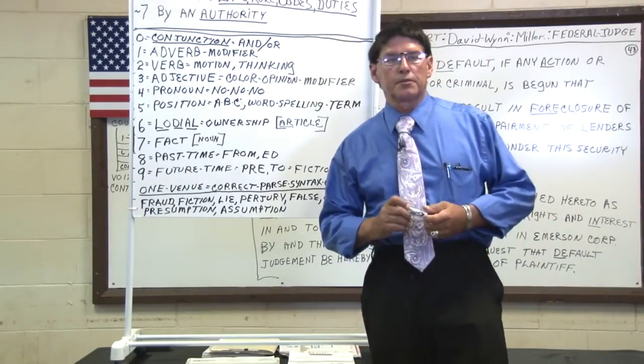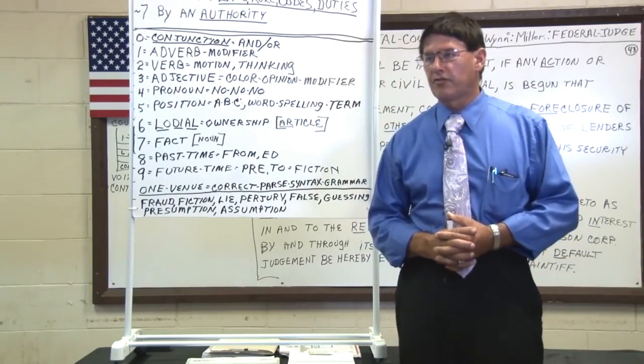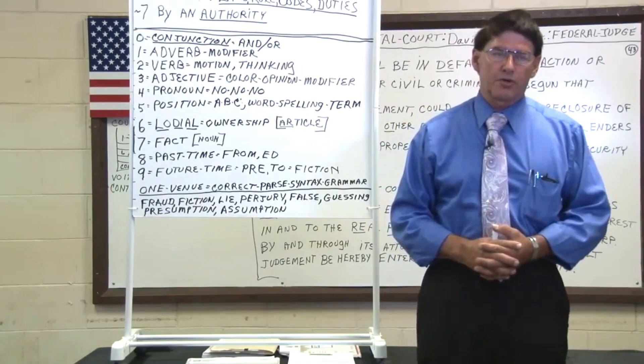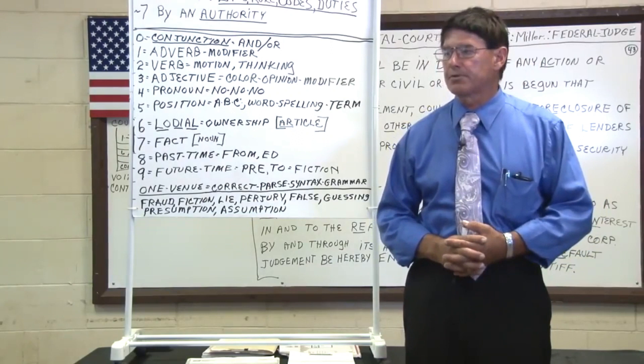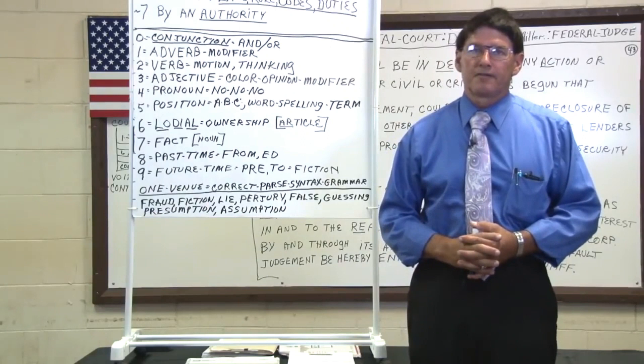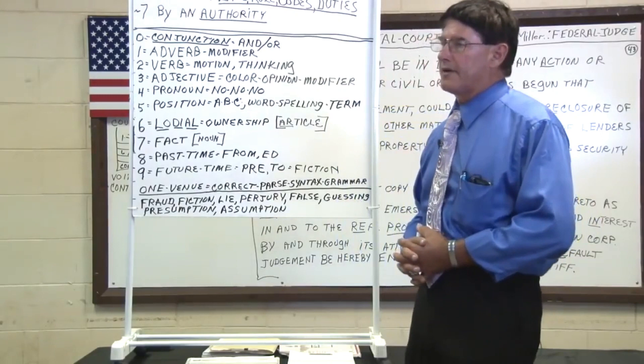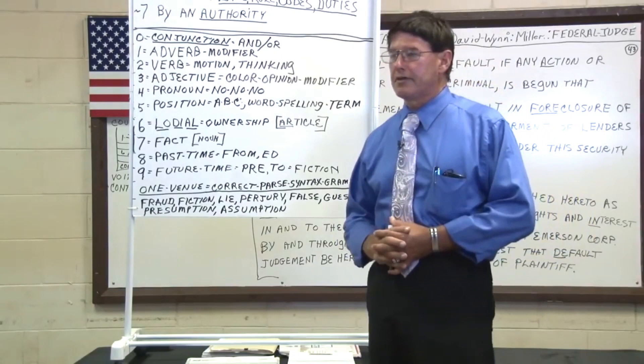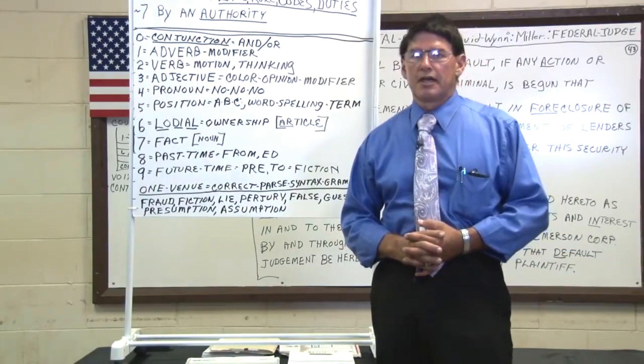Good afternoon, ladies and gentlemen. We are here in Maui, Hawaii, and my name is Federal Postal Judge: David-Wynne: Miller. I punctuate my name with a full colon because it creates a prepositional phrase. I use a hyphen to make David Wynne a compound fact, and then I follow that with a full colon to identify my surname, Miller. Full colons are prepositional phrases used to express a fact — you also use them in your digital time.